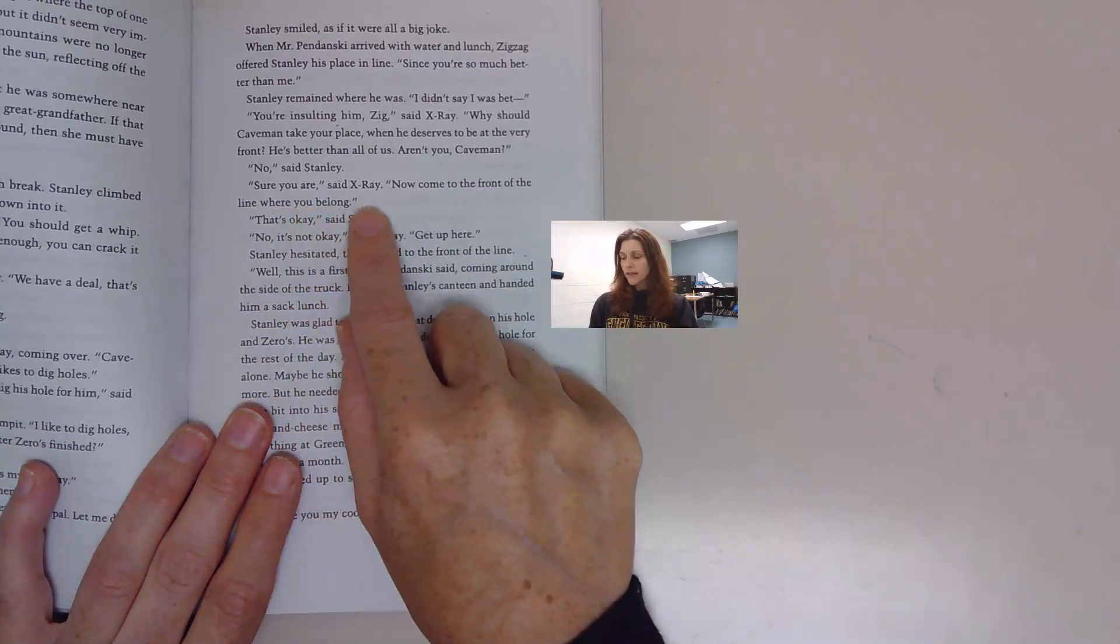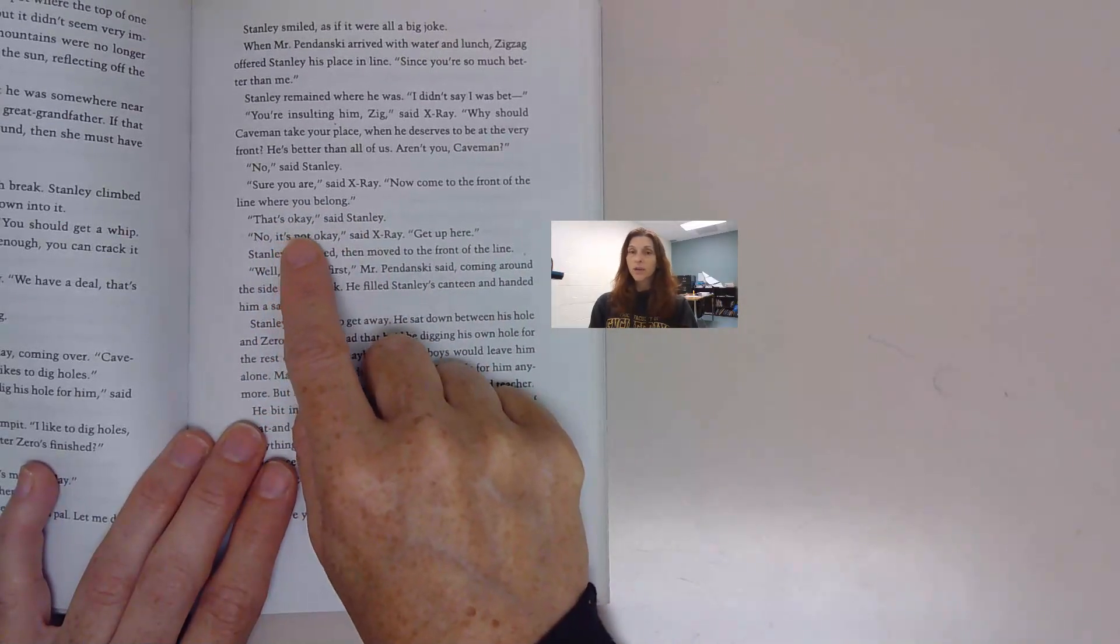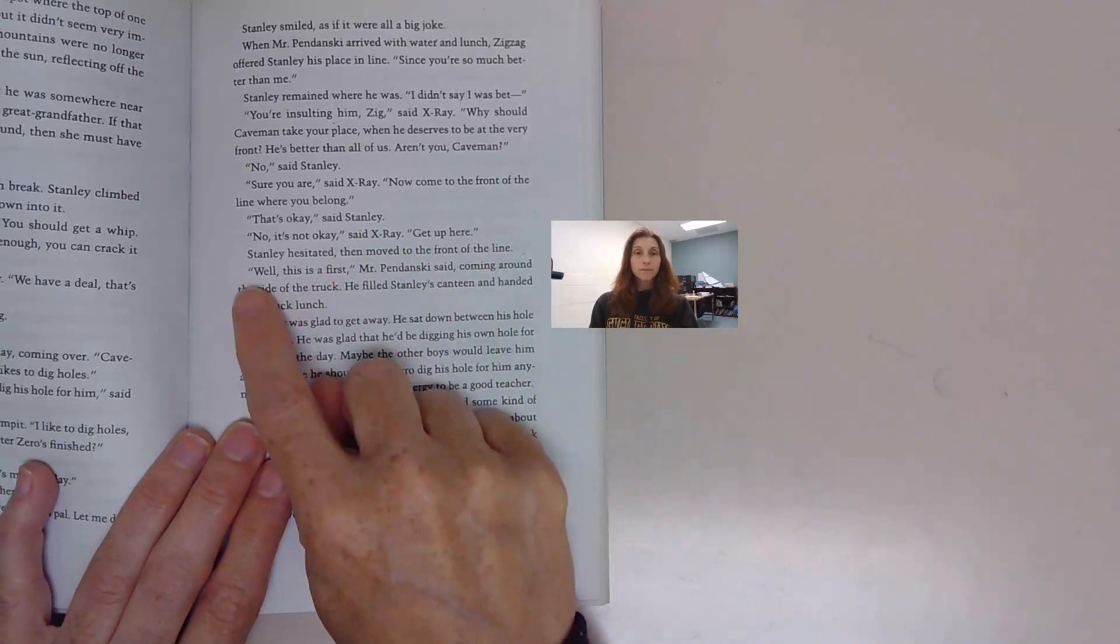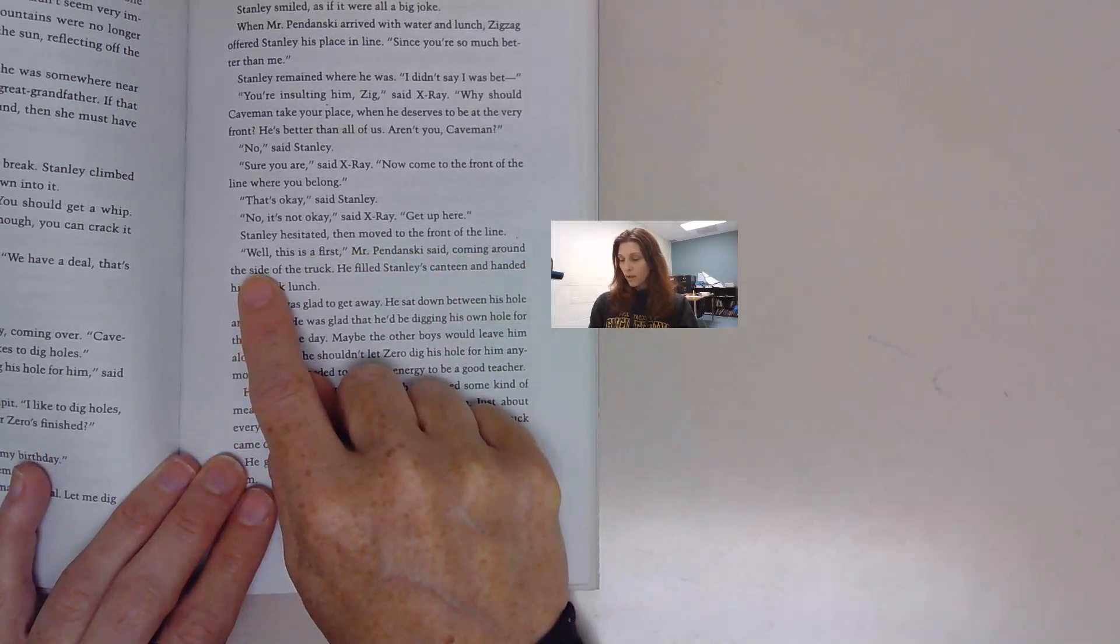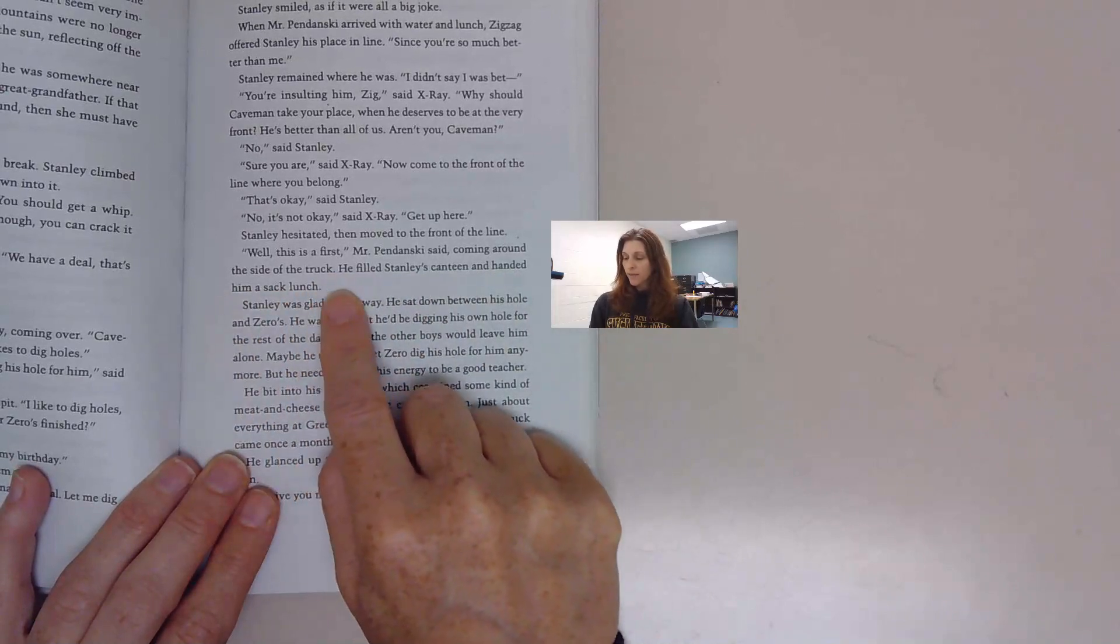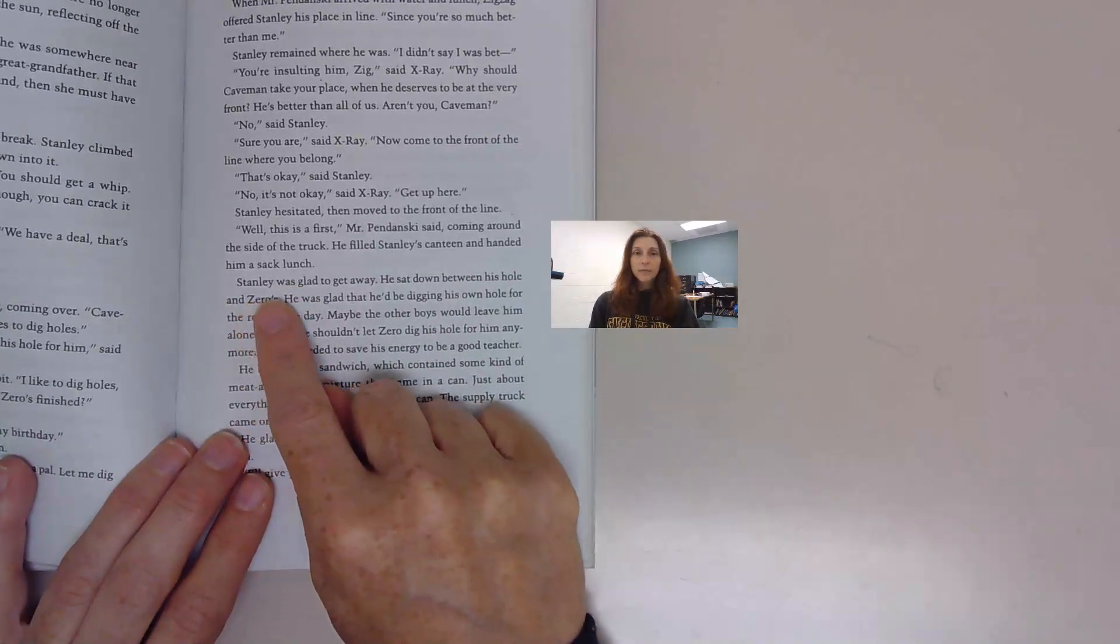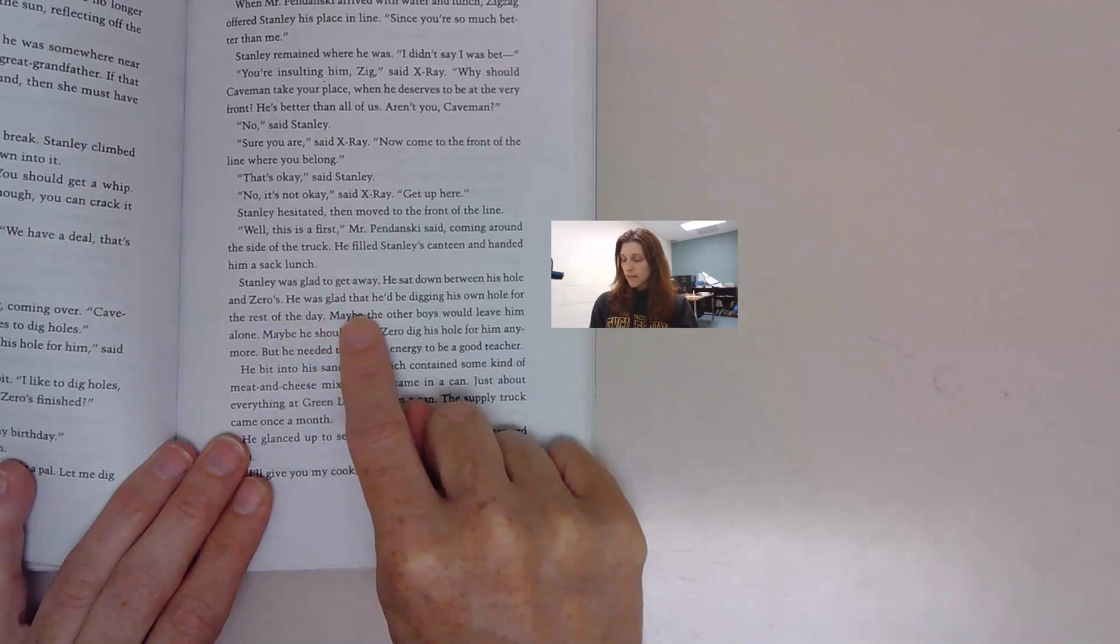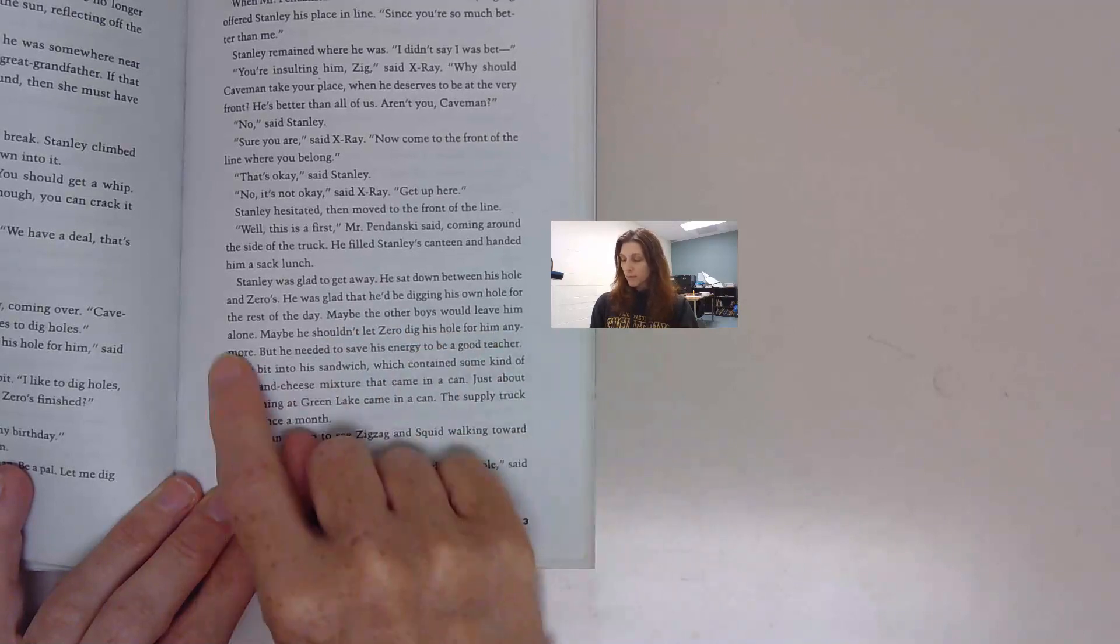No, said Stanley. That's okay. No, it's not okay, said X-Ray. Get up here. Stanley hesitated, then moved to the front of the line. Well, this is a first, Mr. Pendanski said. He filled Stanley's canteen and handed him a sack lunch. Stanley was glad to get away. He sat down between his hole and Zero's. Maybe he shouldn't let Zero dig his hole for him anymore. But he needed to save his energy to be a good teacher.